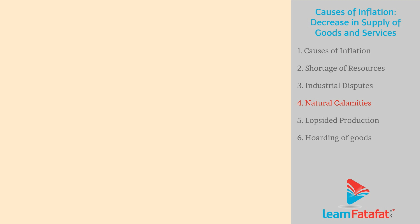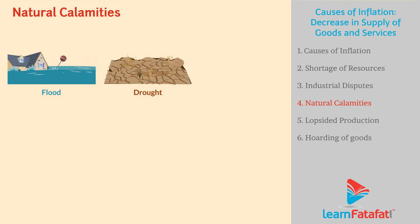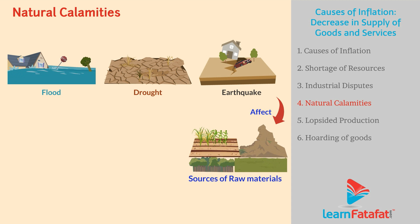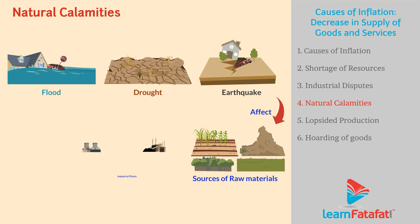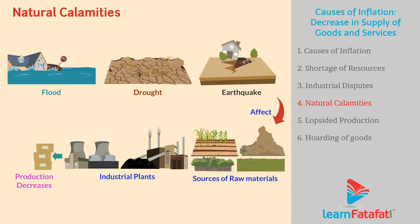Natural Calamities: Natural calamities such as flood, drought, earthquake, etc. affect sources of raw materials as well as industrial plants. As a result, production decreases and inflation takes place.